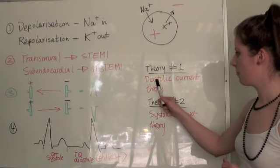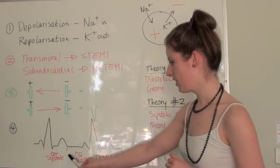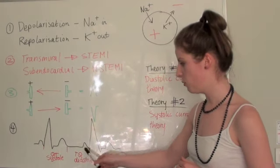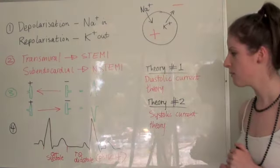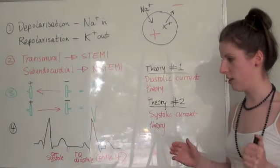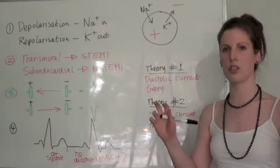And so the diastolic current that they're talking about is here, it's got the TQ interval which is effectively electrical diastole, and the systolic part they're talking about is the QT interval which is electrical systole.